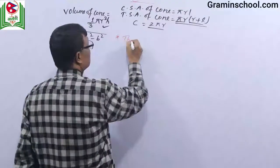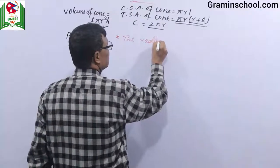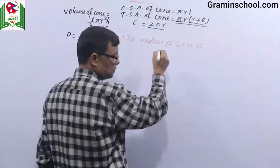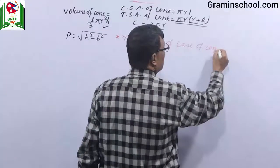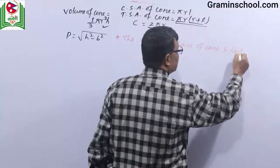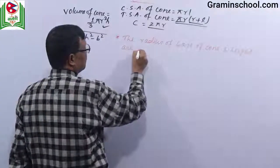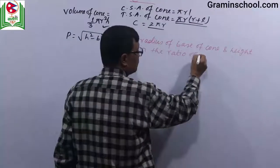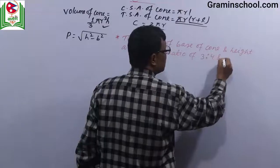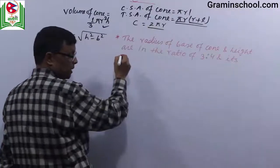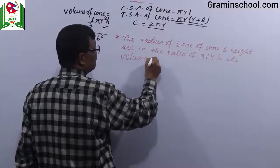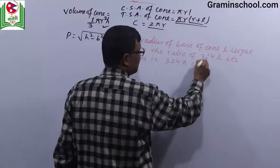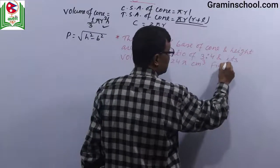Next example: The radius of base of cone and height are in the ratio of 3 is to 4, and its volume is 324 pi cubic centimeter. Find its height.